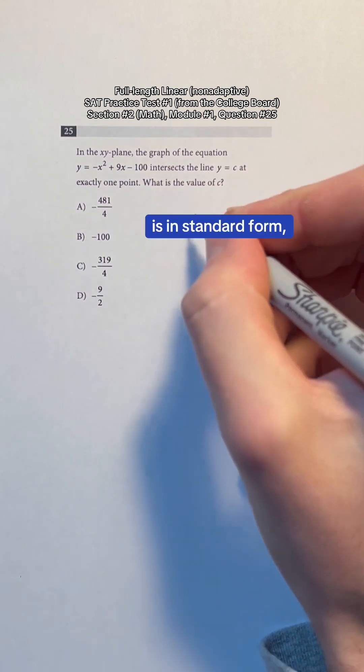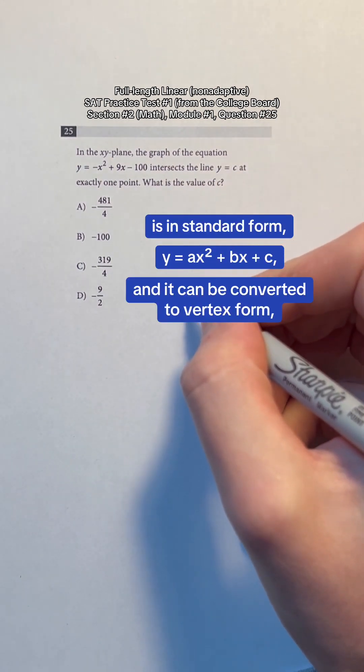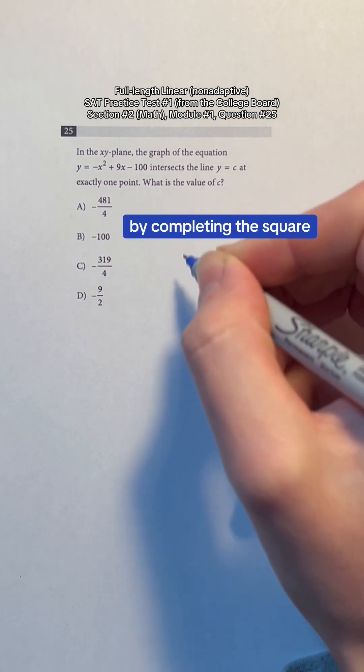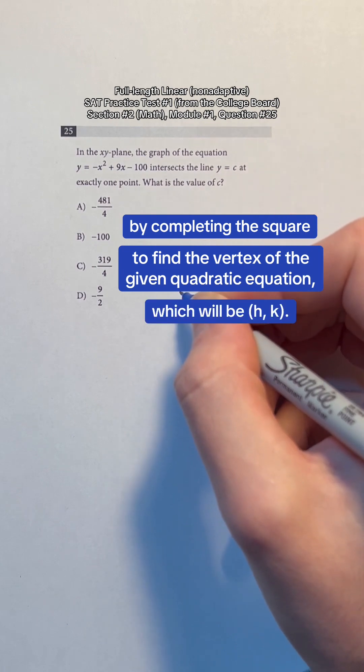The given quadratic equation is in standard form y equals ax squared plus bx plus c, and it can be converted to vertex form y equals a times x minus h squared plus k by completing the square to find the vertex of the given quadratic equation, which will be hk.